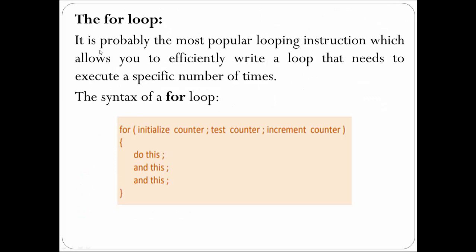The for loop is probably the most popular looping instruction that allows you to efficiently write a loop that needs to execute a specific number of times. Here is the syntax of a for loop. We start with the keyword for. Inside the circular bracket we have to provide three portions: the first portion is for initializing the counter variable, the second portion is the test counter where we provide the condition, and the last portion is for incrementing or decrementing the counter depending upon the condition.